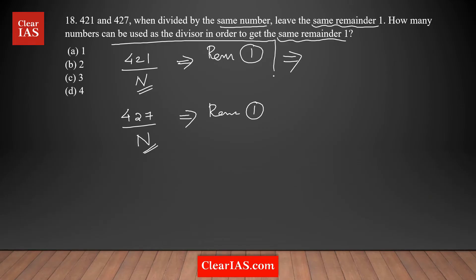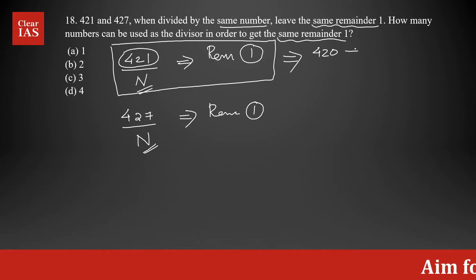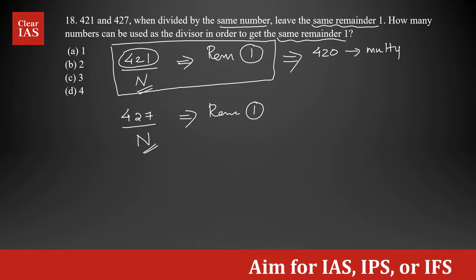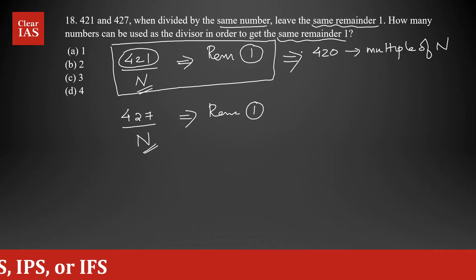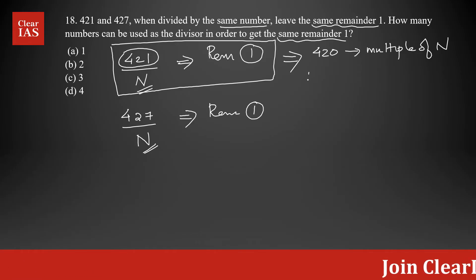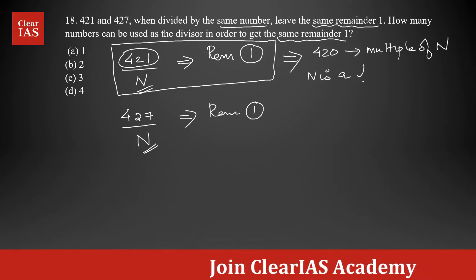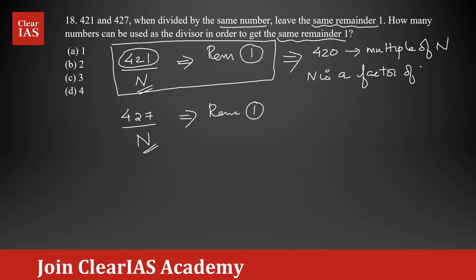From the first case, if 421 divided by n gives a remainder of one, that means if I subtract one from 421, it is exactly divisible by n. So 421 minus 1 is 420, which is exactly divisible by n. I can say 420 is a multiple of n, or that n is a factor of 420.